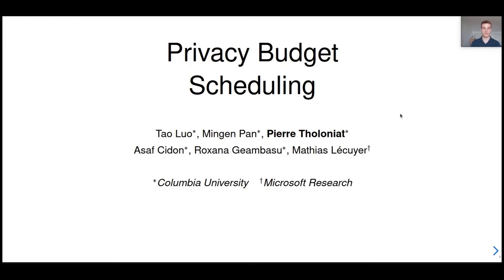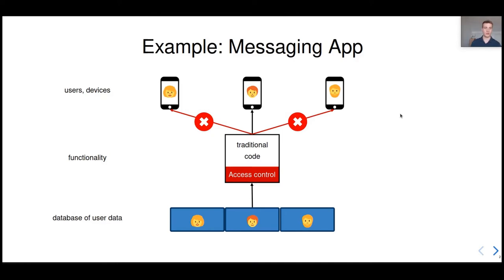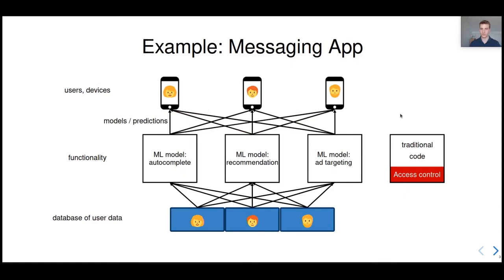Let me start with an example. Consider a messaging application. We have users who are generating sensitive data, such as private messages. I don't want you to be able to read my private messages, so that's why we usually implement access control mechanisms. And this is straightforward with traditional code. However, modern applications increasingly rely on machine learning, in addition to traditional code. For instance, we might want to provide some text completion functionality for our applications. We might also want to train a recommender system, or to run some ad targeting. So all these machine learning models are trained on user data. Then, they are used to issue predictions for users, or even in some cases, we might release the models publicly.